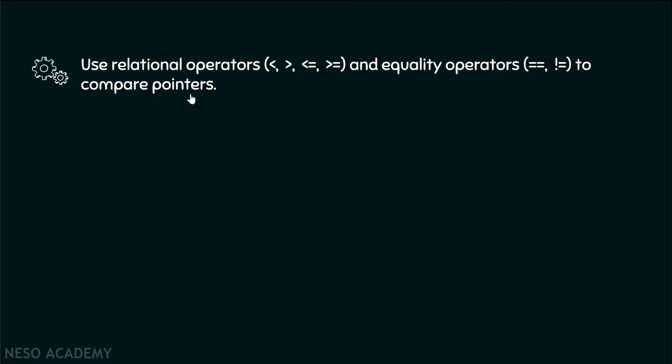When we have two pointers and we want to compare them, we can compare them with the help of relational operators or equality operators. Please note that it is only possible when both pointers point to the same array.